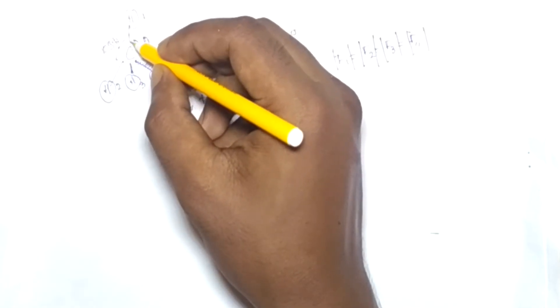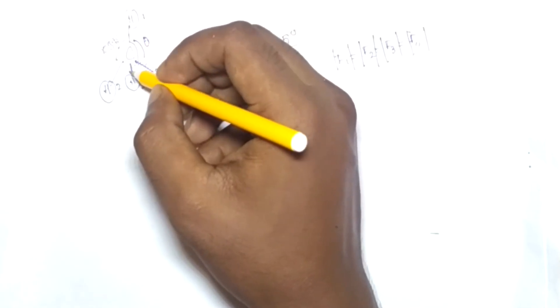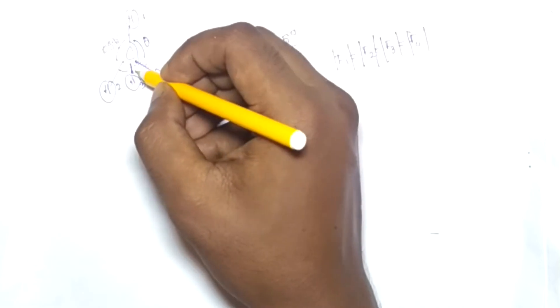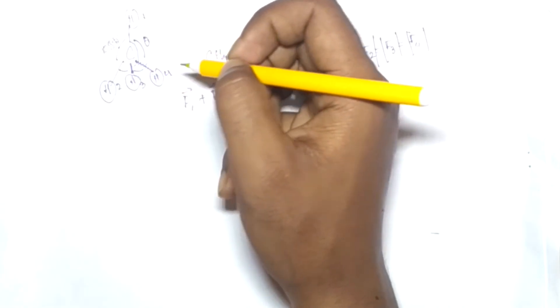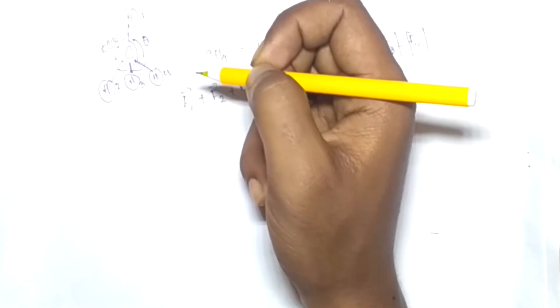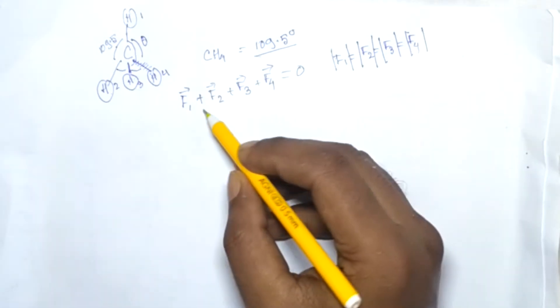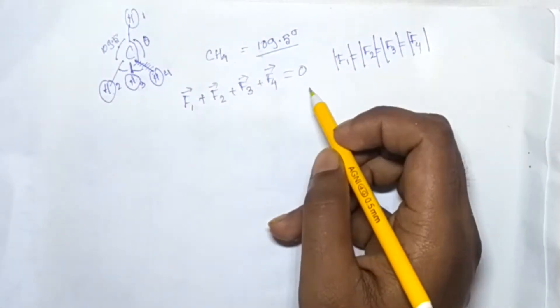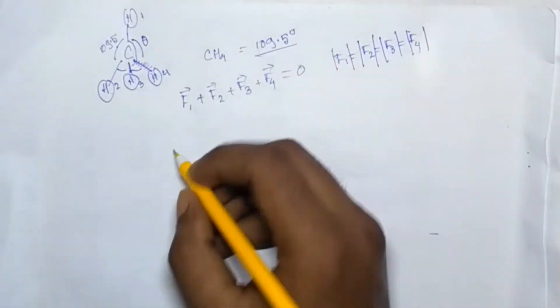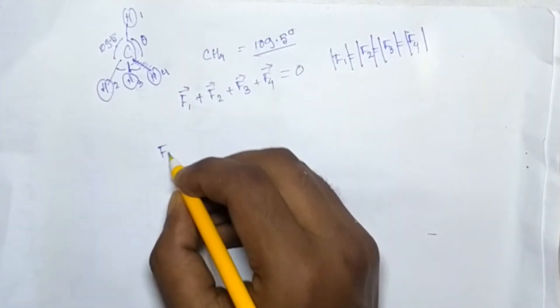So these all the angles, this one, this one, and also this one, and again this one and this one too will also be theta. This is due to the symmetry because F1, F2, F3, F4 will be equal in amplitude.